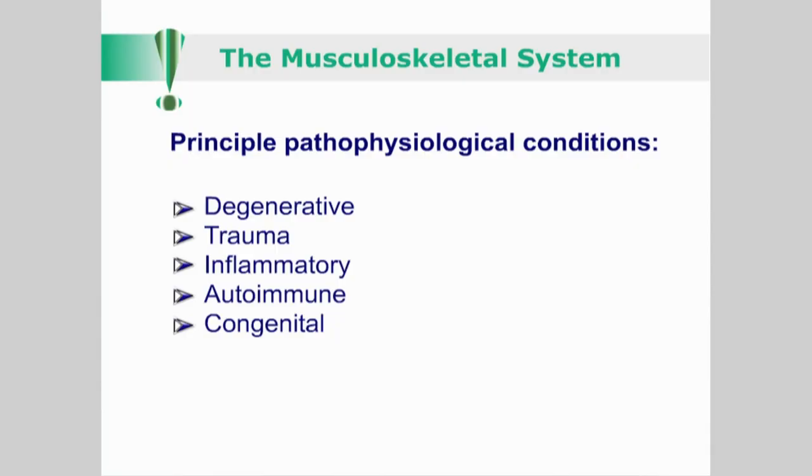Common disorders of these systems include degenerative conditions, trauma, inflammatory, autoimmune, and congenital conditions. A clear understanding of the distinctions between patterns of pain and their different etiologies will help the clinician ask relevant questions for effective differential diagnosis. The patient's primary condition may have a direct musculoskeletal cause or be as a result of a neurological dysfunction.